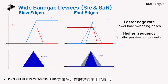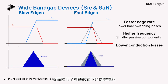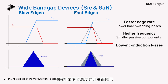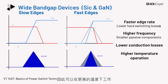Wide bandgap devices also have low on-resistance, leading to lower conduction losses in the on-state. The bandgap energy reduces with temperature, but since wide bandgap devices inherently have a larger bandgap, they can be operated at higher temperature.